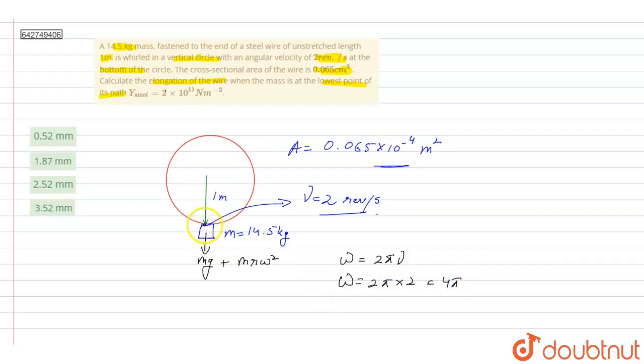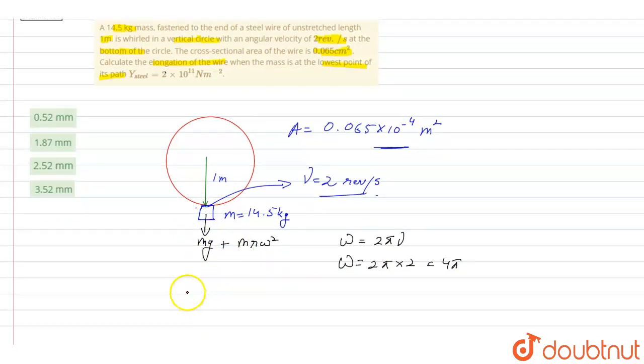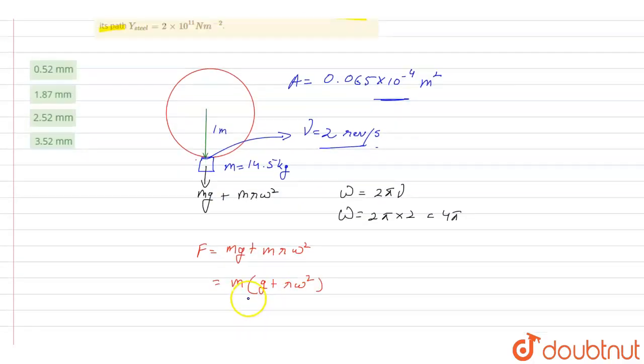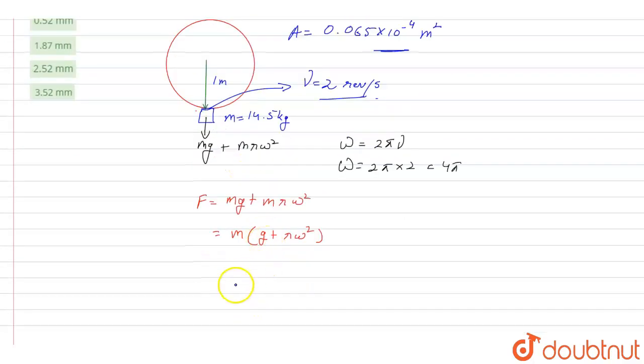So now if I calculate the total force on this wire at this lowest point, I will write force will be equal to mg plus m r omega square. That means this will be equal to m times g plus r omega square. The mass is 14.5 kilograms. So 14.5 into g is 9.8 plus r is 1 meter, multiplied by omega square. Omega square is 4 pi, so it will be 16 pi square. Upon calculation of these values, I will get force is equal to 2429.53 newtons.